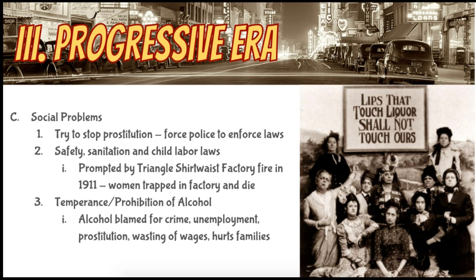Child labor laws in particular were prompted by what was known as the Triangle Shirtwaist Factory Fire in 1911. In this event, there were young women — many of them in their 20s — working in a place called the Triangle Shirtwaist Factory. Shirtwaists were a kind of modern shirt of the day that many women would buy, and most women workers were employed in these garment companies. Somehow a fire started in the building — possibly a cigarette thrown into some lighter material. The way the building was constructed and the methods the business owners used to control their employees caused a disaster.